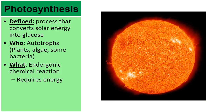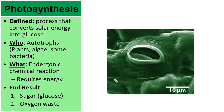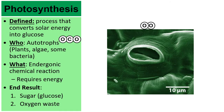Photosynthesis is an endergonic chemical reaction, meaning it requires an input of energy — specifically sunlight. The end results are oxygen as a waste gas and simple sugars like glucose. Zooming in on a leaf, you find pores on the underside called stomata, which open and close to exchange gases — taking in carbon dioxide from the atmosphere and releasing oxygen waste.